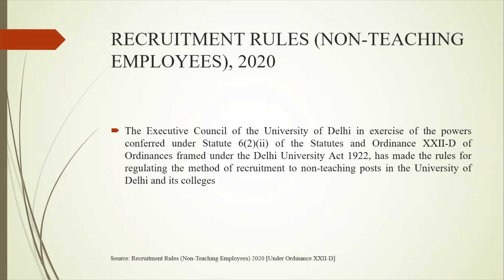The departmental promotion committee will meet at least once in a year before the starting of the recruitment year so that they can prepare a panel for the upcoming recruitment. The promotion for Groups B and C will be based on seniority-cum-fitness, quality of annual confidential reports — also known as APAR reports — and vigilance clearance. So, the promotion is based on three aspects: seniority-cum-fitness, quality of your APAR, and vigilance clearance.